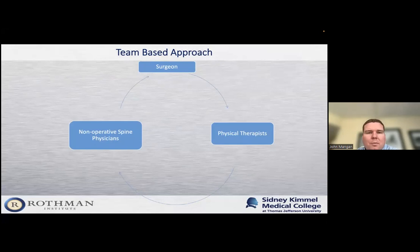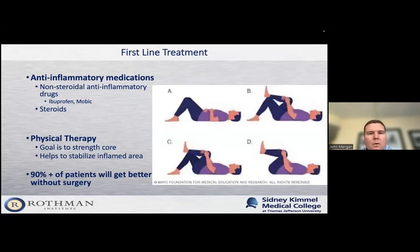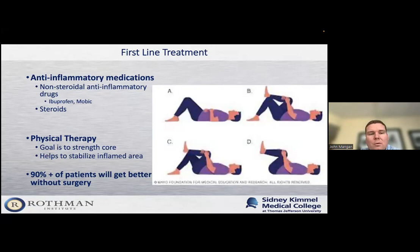Let's talk about treatments. Here at Rothman, we have a team-based approach for our spine patients — a great team of non-operative spine physicians, physical therapists, and surgeons that work with our patients to give them complete care through all the different modalities. The first-line treatment for somebody with an acute radiculopathy or sciatica, or their first episode of a stenosis flare-up, is to treat conservatively with anti-inflammatory medications such as Advil or Aleve. There are prescription versions like Mobic or Meloxicam. We also give patients steroids sometimes to help calm down the inflammation, particularly when patients have a herniated disc causing a lot of acute inflammation. These medications can be very helpful in reducing that inflammation and improving symptoms.